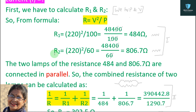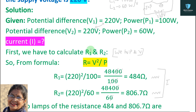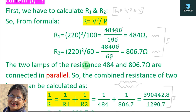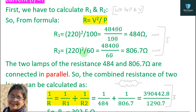For lamp 2: R2 = V² / P = 220² / 60 = 48400 / 60 = 806.7 ohm. The power of the other lamp is 60 watt, so we write 60 in the denominator. The unit of resistance is ohm. Step 1 is done.